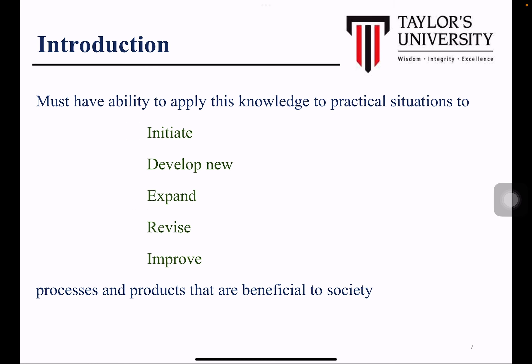As a chemical engineer, you must have the ability to apply all the knowledge you have acquired to initiate a new design, develop a new design, expand an existing plant, or make revisions to make the plant more sustainable, more profitable, and to improve the design. You can use new technologies being researched every day and see how you can change or transform technology for the betterment of society.